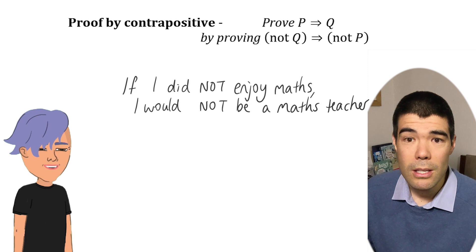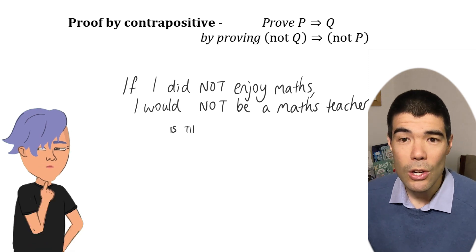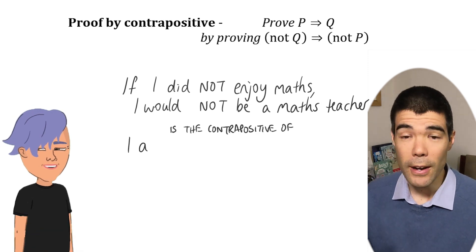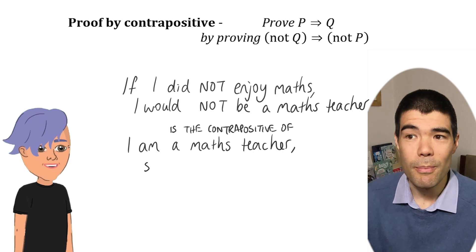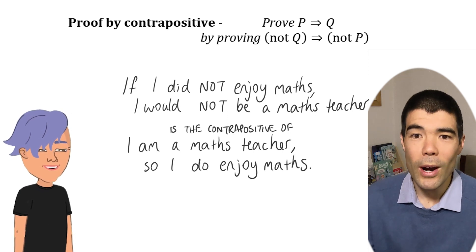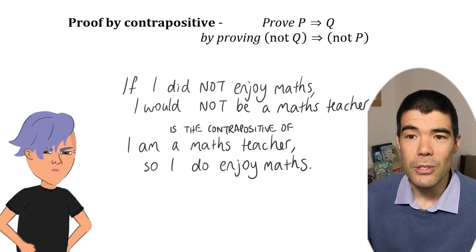That's a contrapositive. The statement, if I did not enjoy maths, I would not be a maths teacher, is the contrapositive of if I am a maths teacher, then I do enjoy maths. They're logically equivalent. So if you prove one of them is true, then both of them must be true.